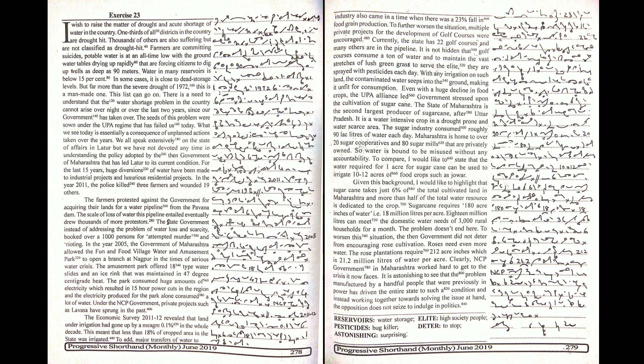In the year 2005, the government of Maharashtra allowed the Fun and Food Village water and amusement park to open a branch at Nagpur in times of serious water crisis. The amusement park offered 18 types of water slides and an ice rink that was maintained in 47 degree centigrade heat.